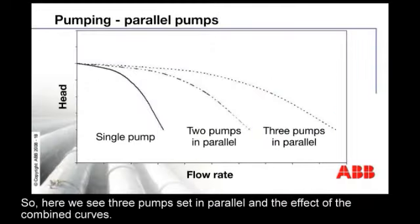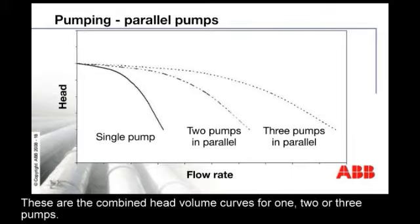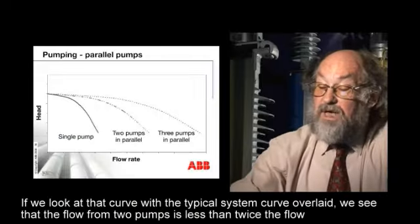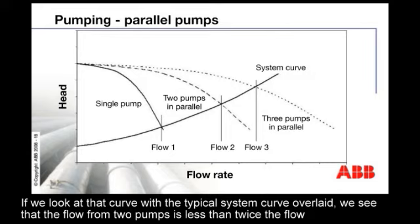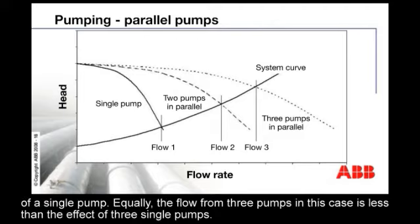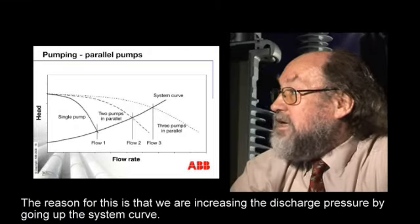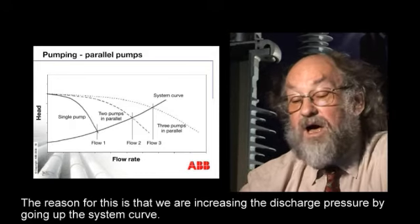Here we see three pumps set in parallel and the effect of the combined curves. These are the combined head-volume curves for one, two, or three pumps. If we look at that curve with a typical system curve overlaid, you'll see that the flow from two pumps is less than twice the flow of a single pump. Equally, the flow from three pumps is less than the effect of three single pumps. The reason for this is that we're increasing the discharge pressure — they're going up the system curve.